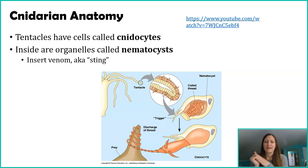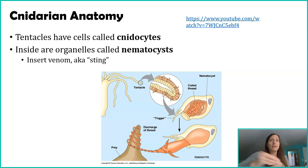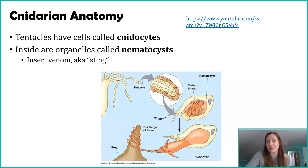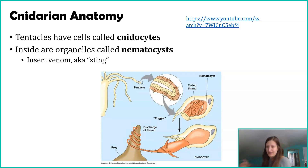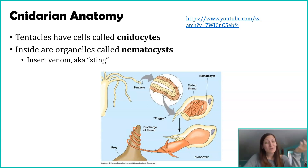When the trigger hair gets hit, it stimulates the nematocyst to release and extend. It latches onto the prey item — or it could be a predator, since it can also be a defensive tactic. It wraps around or injects itself into that organism and injects venom. Usually when people say they got stung by a jellyfish, they don't think it's injecting venom — but it is. That's what the sting is: venom.